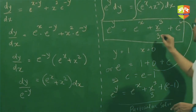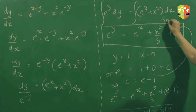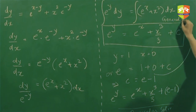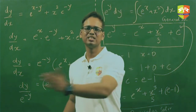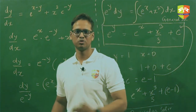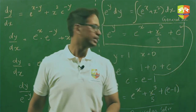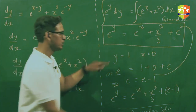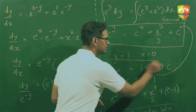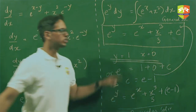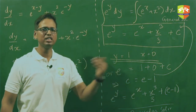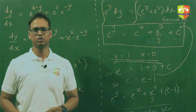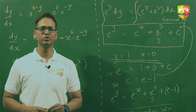So the particular solution is e^y = e^x + x³/3 + e − 1, while the general solution is the equation with arbitrary constant c. Finding the particular solution always goes via the general solution — you use the initial conditions to find the value of the arbitrary constant. Hope this is clear.